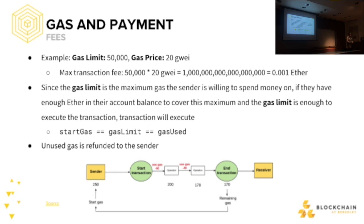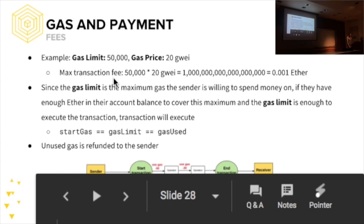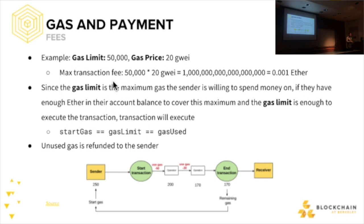Here's an example: gas limit of 50,000 gas units, gas price of 20 Gwei. Using the max transaction fee formula — 50,000 times 20 Gwei — gives a very small amount in Ether, basically just pennies. Since the gas limit is the maximum gas the sender is willing to spend, if they have enough Ether to cover this maximum and the gas limit is enough to execute the transaction, the transaction will execute. You just need enough gas to execute transactions. Unused gas is refunded to the sender.